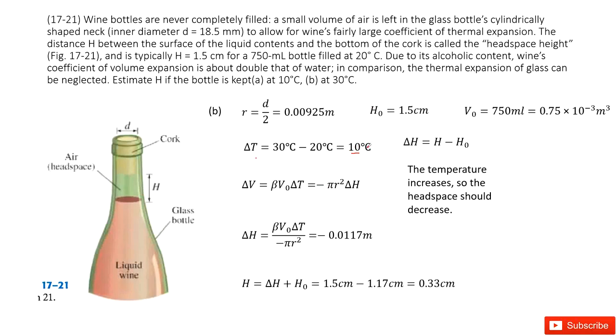And input this known quantity inside. What do we get? We get this delta h becomes negative 0.0117. And then input it in this function. Get the answer there. Thank you.